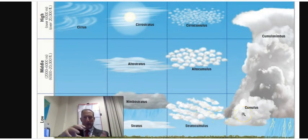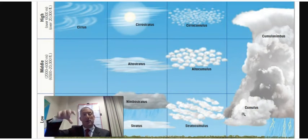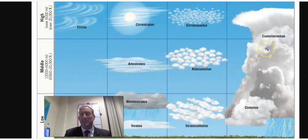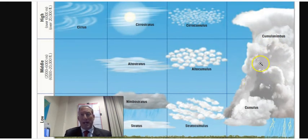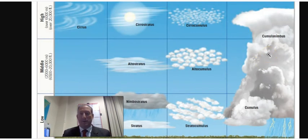Cumulus clouds start out as low, white clouds and then begin to build. If there's enough energy, they build into Cumulonimbus clouds, which can go as high as 70,000 feet. When there are tornadoes in Oklahoma and Texas with a lot of heat and energy in the summer, they can build to around 70,000 feet. Our strongest thunderstorms around Long Island are generally around 25,000 to 30,000 feet in the summer — not as much energy here as in Texas, Oklahoma, Mississippi, and Kansas.